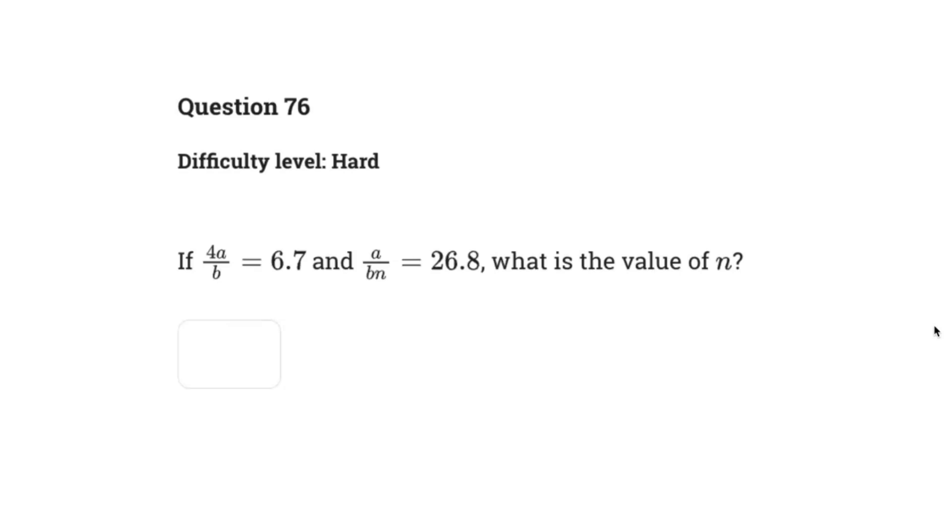All right, so this problem says if 4a over b equals 6.7 and a over bn equals 26.8, what is the value of n?